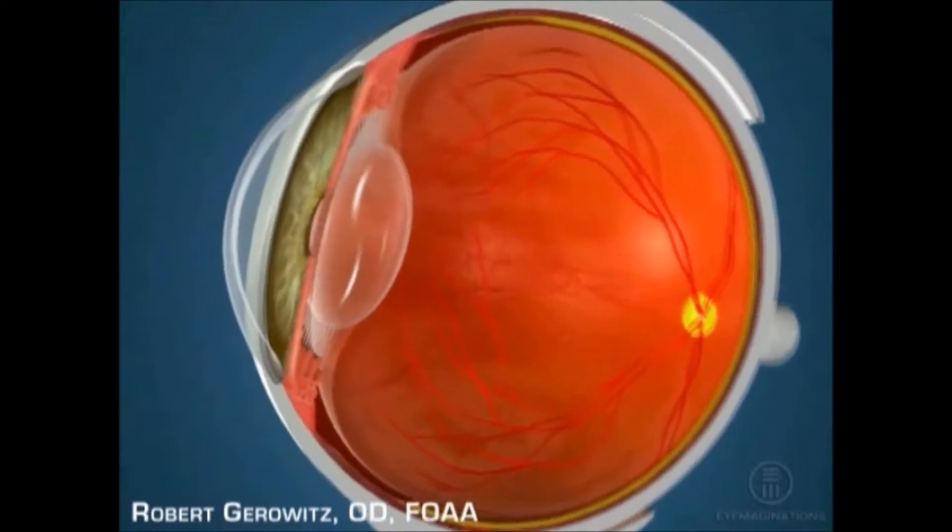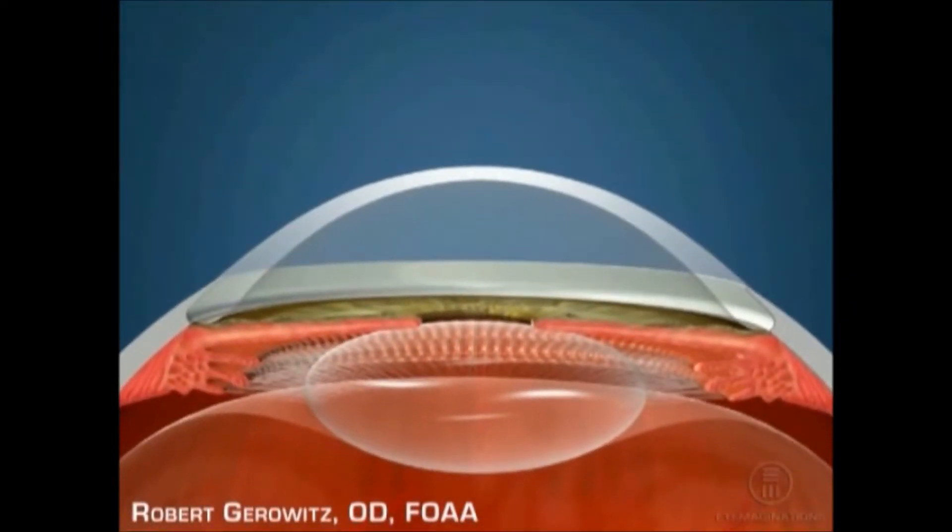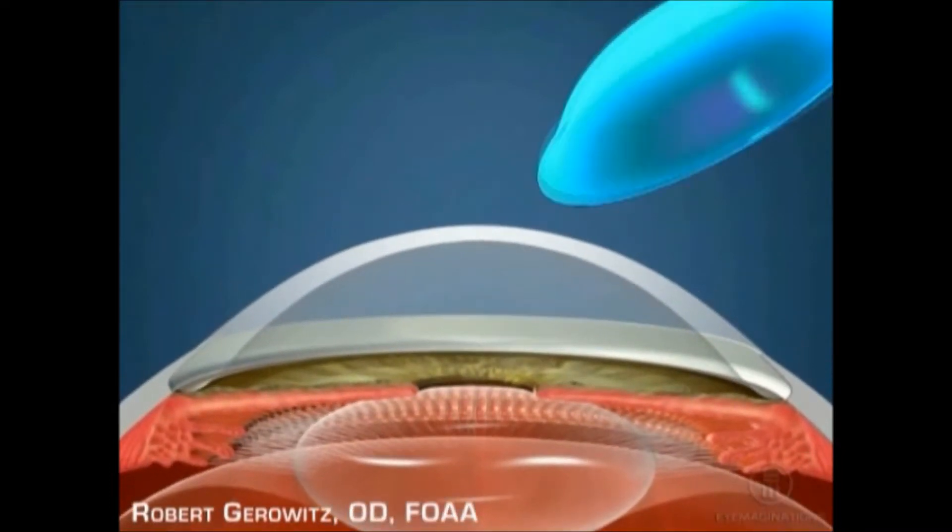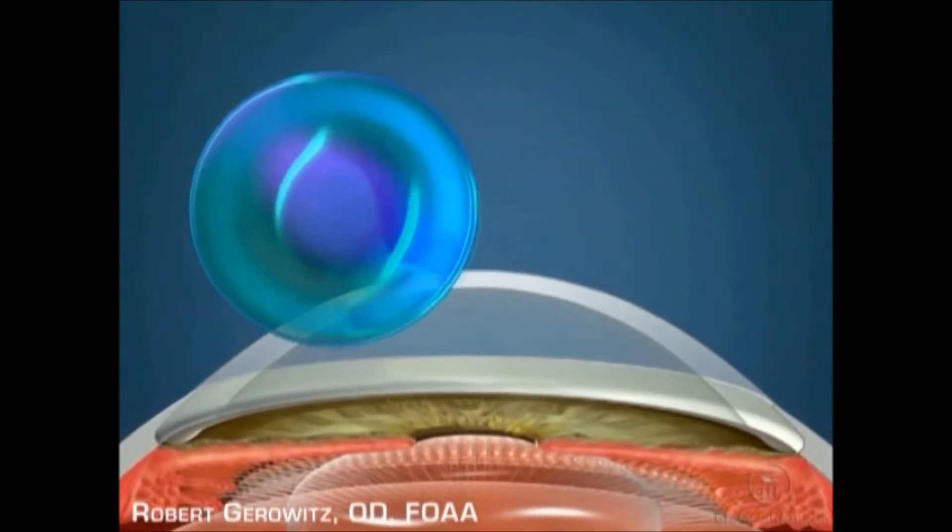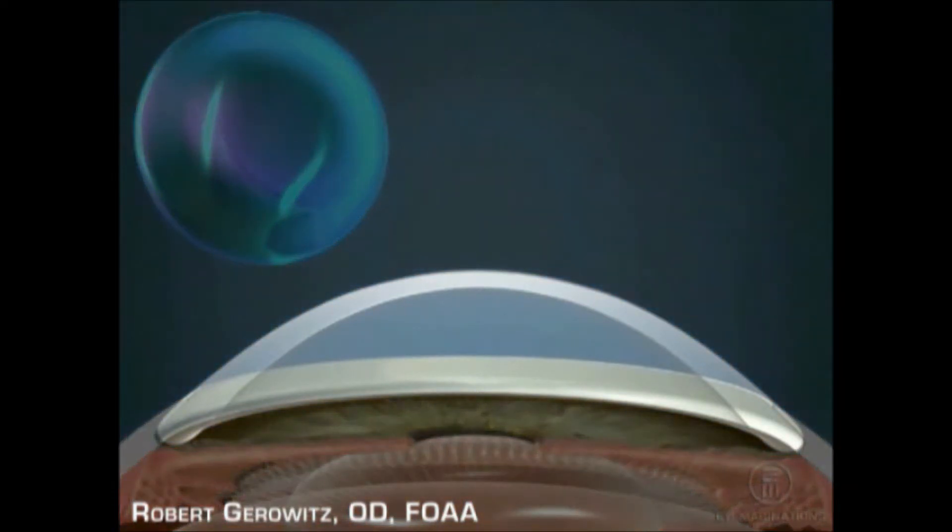Corneal molding offers a legitimate alternative to laser vision correction for many people. This procedure uses specially designed contact lenses which are prescribed to reshape the surface of the cornea and reduce or eliminate the need for glasses or regular contact lenses.